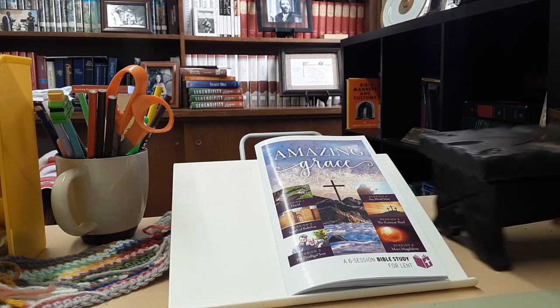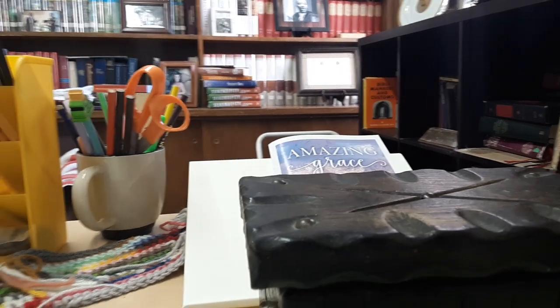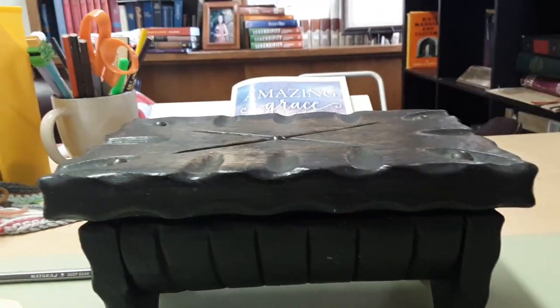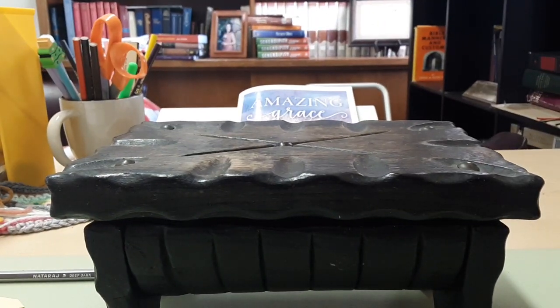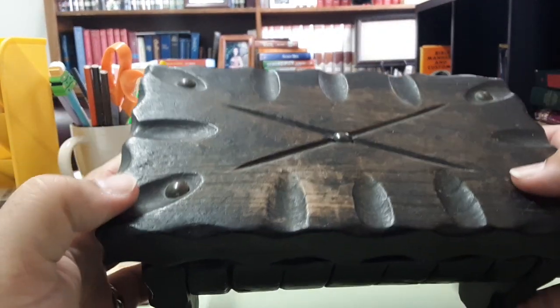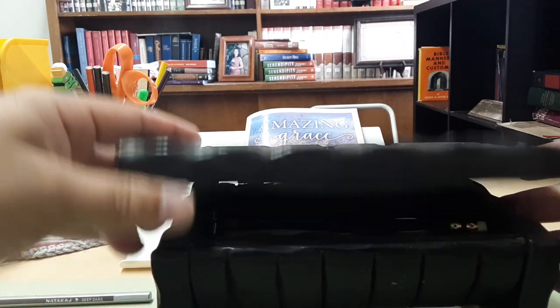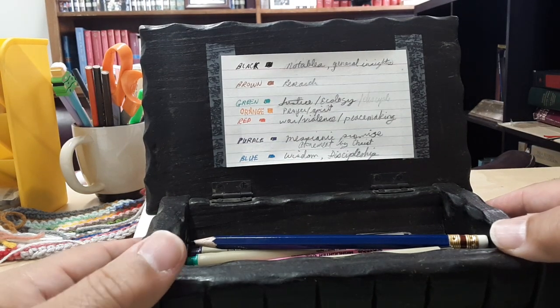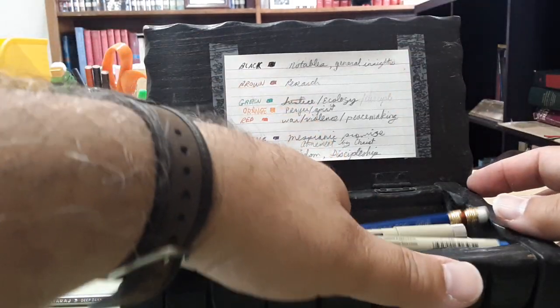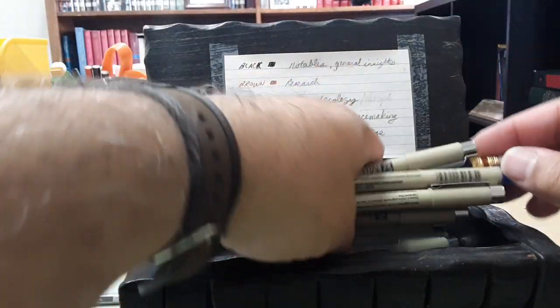So here on my desk, I have this box and this is my pen marking box, as you can see. It's just something I picked up at a yard sale or a thrift shop or something. Open it up and then there you go. There's my pen marking system. I have my card here, so I always know what to do. So let's just go through it real fast.